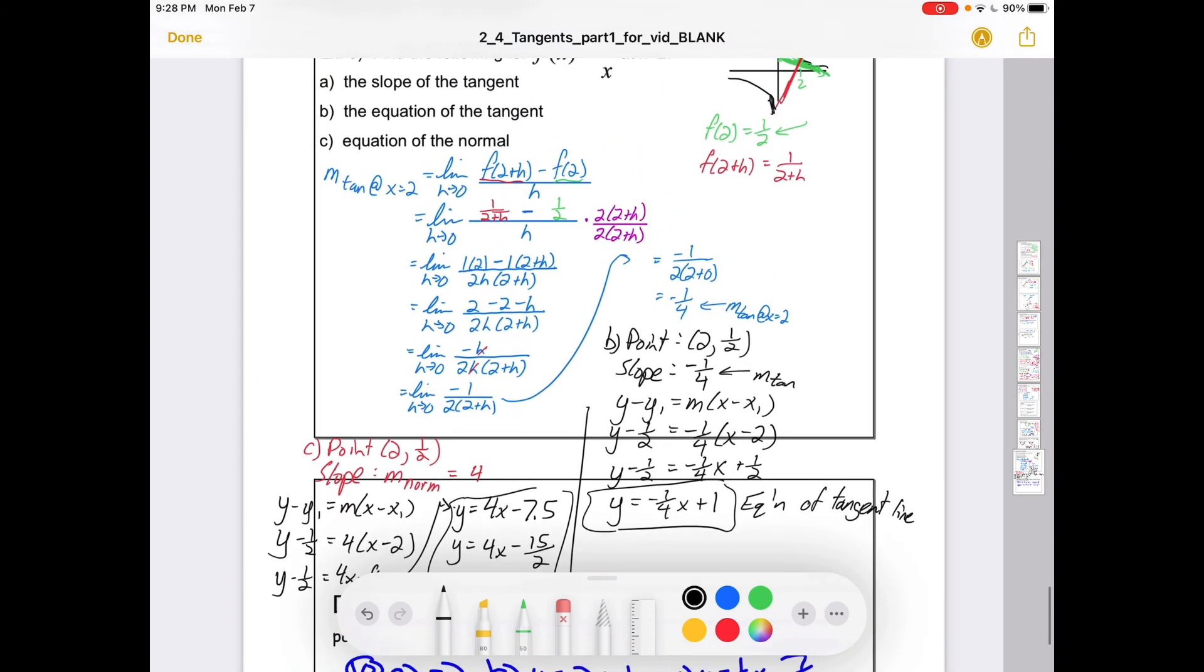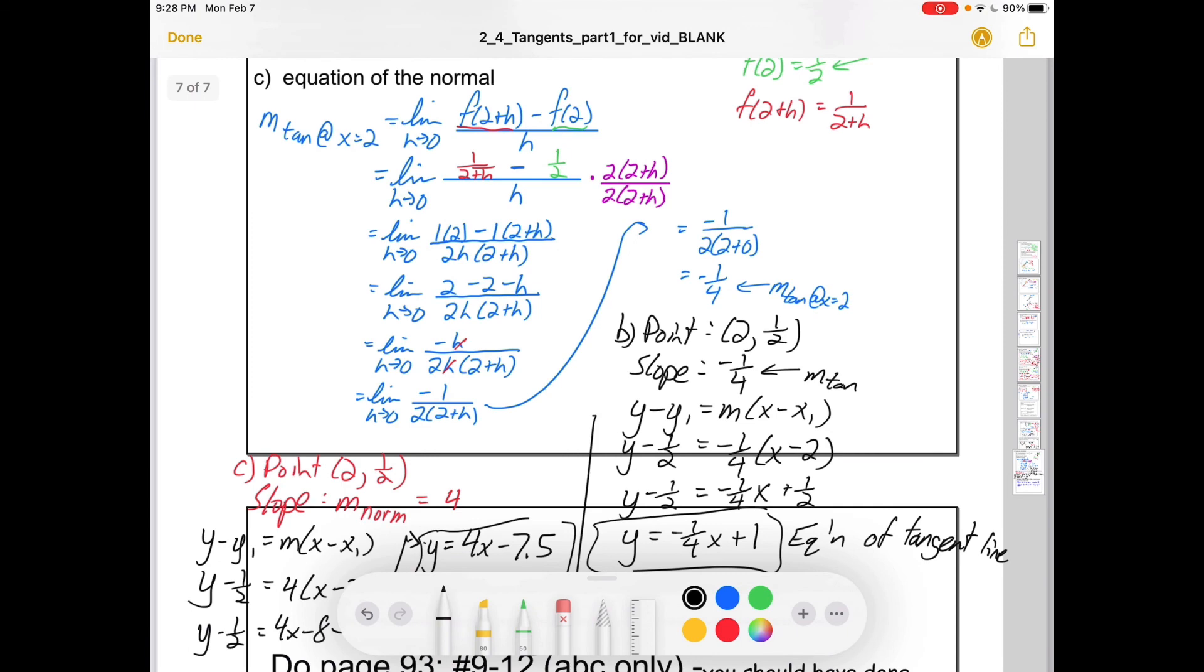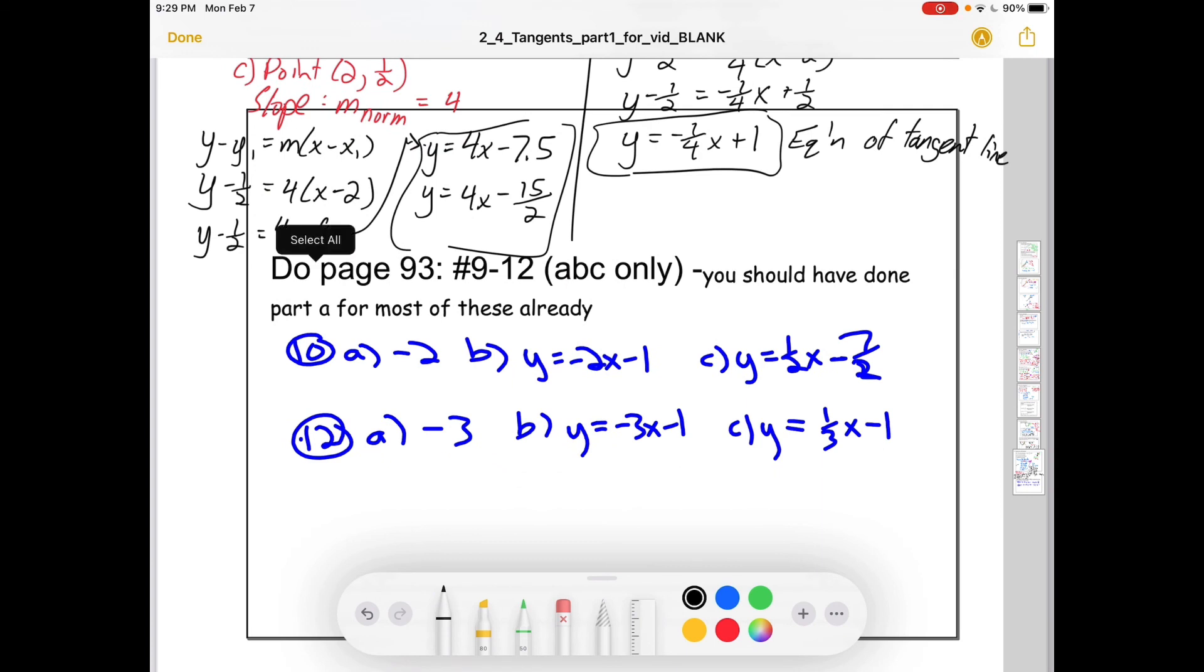So same idea here. You find a point and a slope. If it's the tangent, then you've already found the tangent slope by going through this kind of process. If it's the normal, well, you just take the negative flip. Again, here's some practice stuff from the book. I hope this has been helpful. Good luck with the material, and take care, folks.